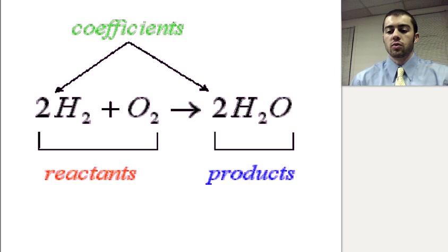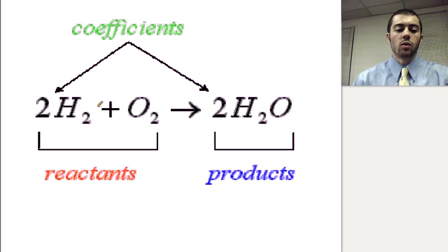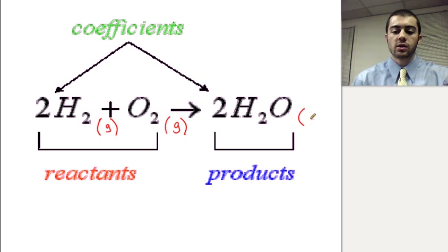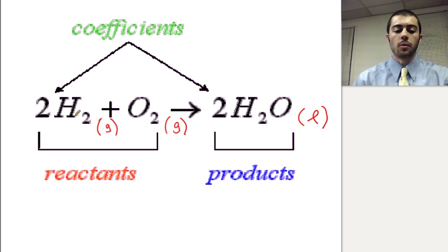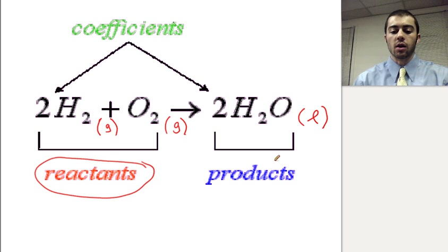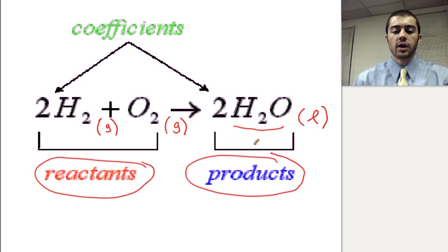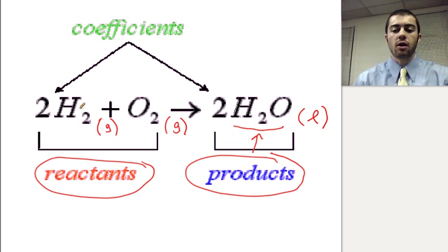Here's a visual of all the parts of a chemical equation. In terms of phases, we could write hydrogen as a gas, oxygen as a gas, and water as a liquid. You'll be given these phases — you won't have to predict them except for solubility, which we'll get to later. Once we add the phases in, these are all the parts of a chemical equation you need to know. The reactants — hydrogen and oxygen — are on the left side, and water is the product on the right side.